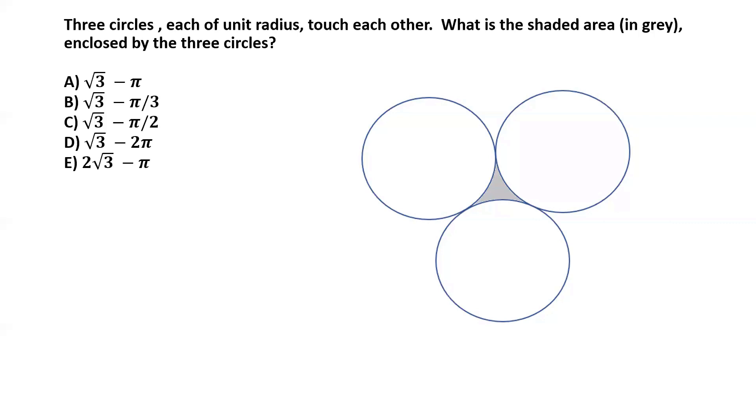So the first step in this process is to realize that if we connect the centers of these circles, and let's call the centers P, Q, R, if we just connect them, we're going to get a triangle.